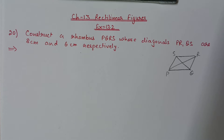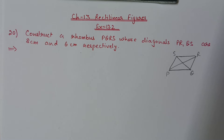Hello students, we are doing Chapter 13 Rectilinear Figures, Exercise 13.2. Till question number 19 we have done already, now we are starting from question number 20: construct a rhombus PQRS whose diagonals PR and QS are 8 centimeter and 6 centimeter.